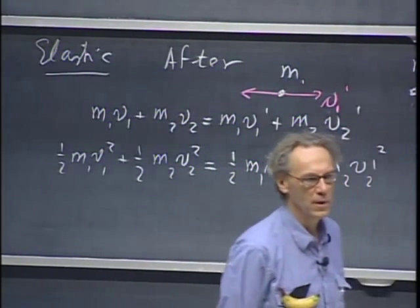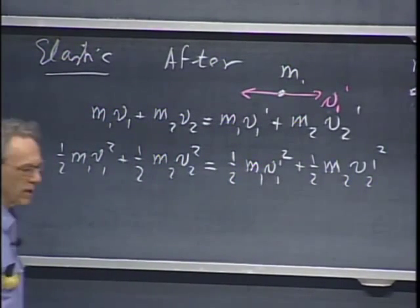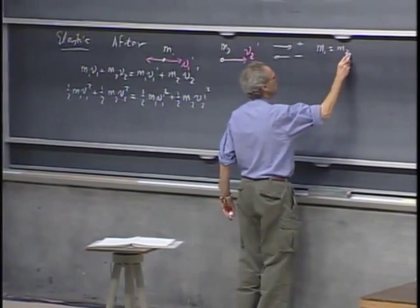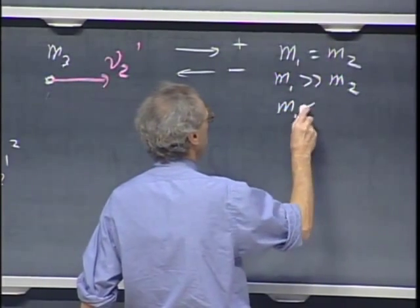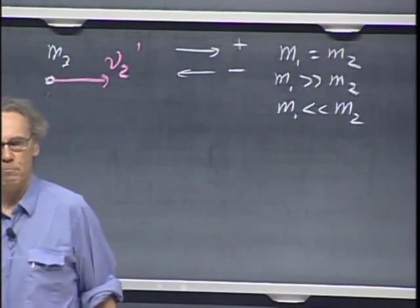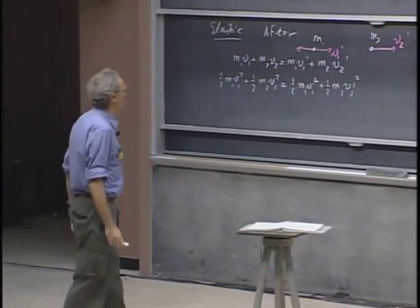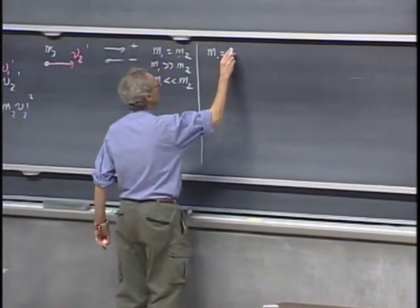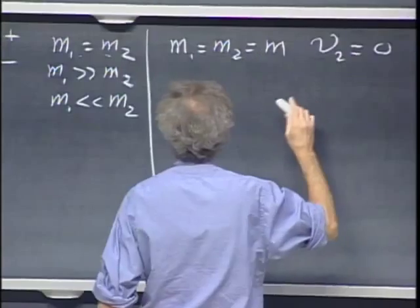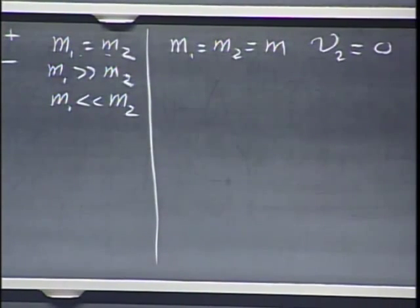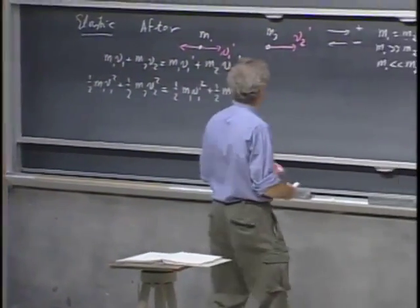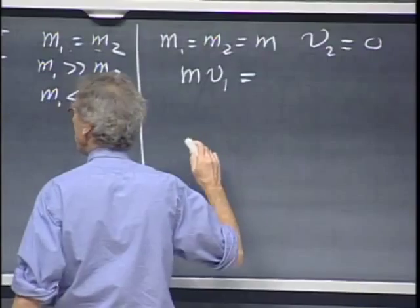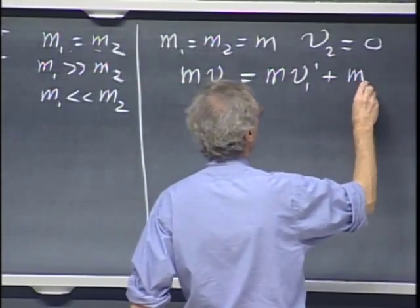Two equations with two unknowns — in principle you can solve for v1 prime and v2 prime, except that it could be time-consuming. On exams, normally you get a problem where either m1 equals m2, or m1 is much much larger than m2, like banging a basketball onto a ping-pong ball. I will do a very simple example taking m1 equals m2, calling that m, and simplifying further by making v2 zero, so the second object is standing still. Conservation of momentum becomes m v1 equals m v1 prime plus m v2 prime.